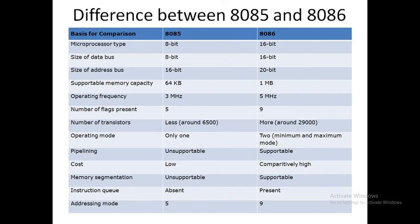Number of transistors: around 6500 in 8085 whereas in 8086 the number of transistors is around approximately 29,000. Operating mode: only one mode in 8085 but in 8086 there are two modes, that is minimum mode and maximum mode.